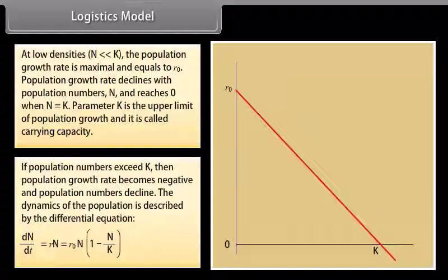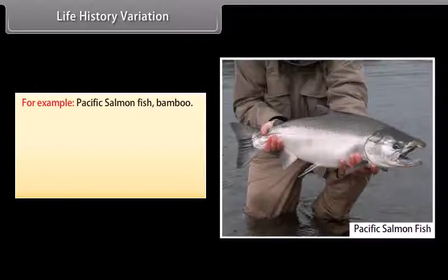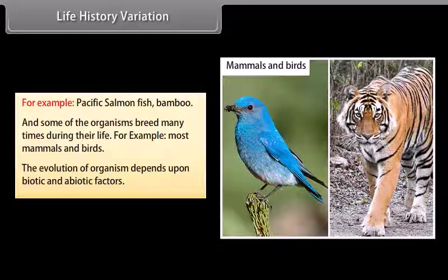Life history variation: By using the available habitat, organisms evolve towards the most efficient reproductive strategy. Some organisms breed only once in their lifetime — for example, Pacific salmon fish and bamboo. Some organisms breed many times during their life — for example, most mammals and birds. The evolution of organisms depends upon biotic and abiotic factors.